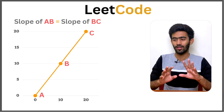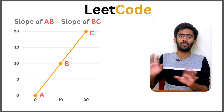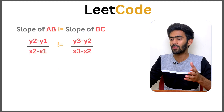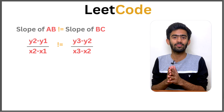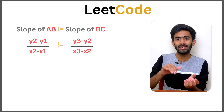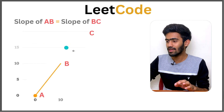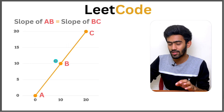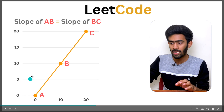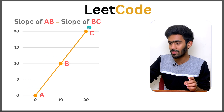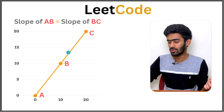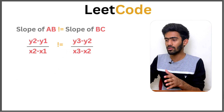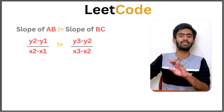The decimal slope formula is: slope of AB = (y2 - y1) / (x2 - x1), and slope of BC = (y3 - y2) / (x3 - x2). If slope of AB equals slope of BC, the points are collinear and it is not a boomerang. If the slopes are not equal, the points are not on a straight line.